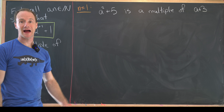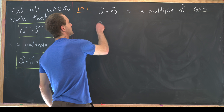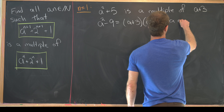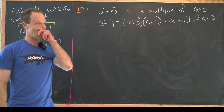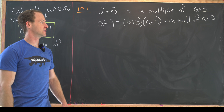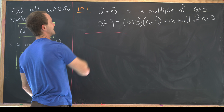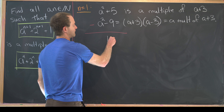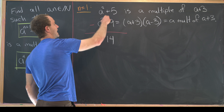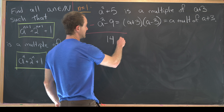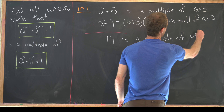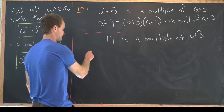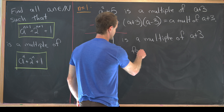Notice that a² - 9 is always a multiple of a + 3, because a² - 9 = (a + 3)(a - 3). So if we take the difference of two multiples of a + 3 — specifically (a² + 5) minus (a² - 9) — we get that 14 is a multiple of a + 3.